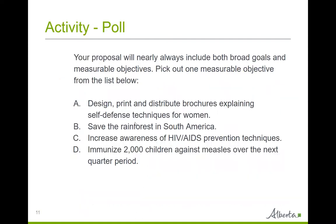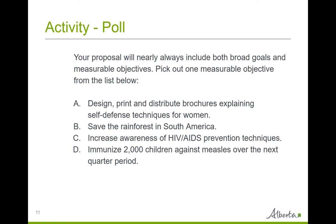Now another question for you. Your proposal will nearly always include both broad goals and measurable objectives. Pick out the measurable objective from the list below. A: Design, print, and distribute brochures explaining self-defense techniques for women. B: Save the rainforest in South America. C: Increase awareness of HIV-AIDS prevention techniques. D: Immunize 2,000 children against measles over the next quarter period. Go through the SMART analysis — specific, measurable, attainable, realistic, and timely. The answer is D. This answer has a clear goal, is measurable, realistic, attainable, and timely too.